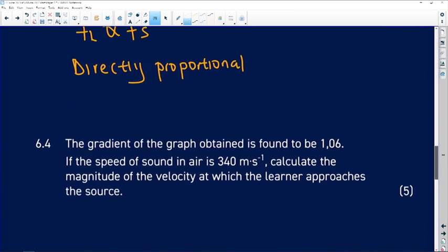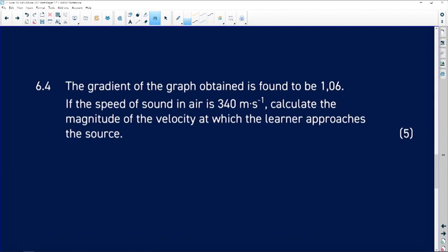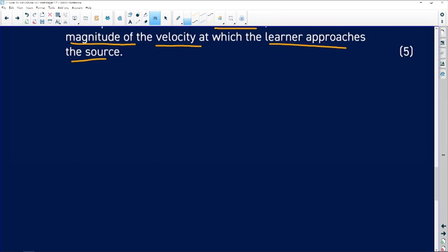Let us move now to the next question which is 6.4. It says that the gradient of the graph we have obtained was found to be 1.06. So we have our gradient here which is 1.06. If the speed of sound in air is 340 meters per second, we must then calculate the magnitude of the velocity at which the learner approaches the source.